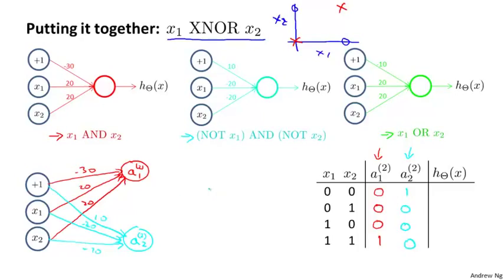Finally, I'm going to create my output node, my output unit that is a3^(1). This is what will output h(x). And I'm going to copy over the OR network for that. And I'm going to need a plus 1 bias unit here. So I draw that in. And I'm going to copy over the weights from the green network. So that's minus 10, 20, 20. And we know earlier that this computes the OR function.